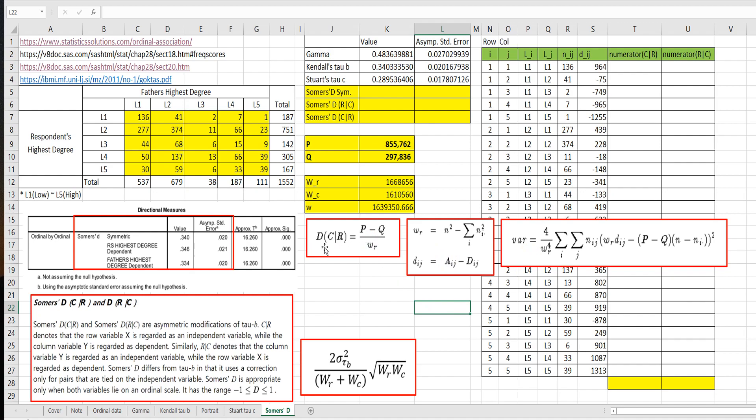These three formulas I have used for this video. The meaning of column given R is that the row variable is regarded as an independent variable, while the column variable is regarded as dependent variable. So let's calculate SOMOSD column given R.